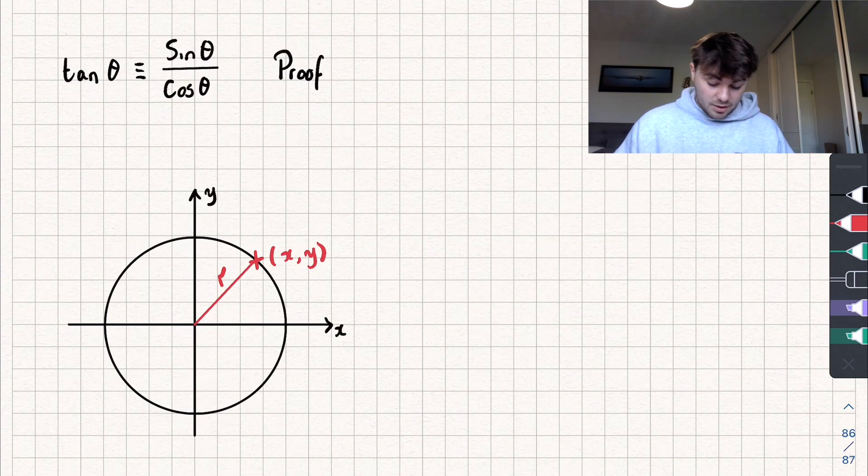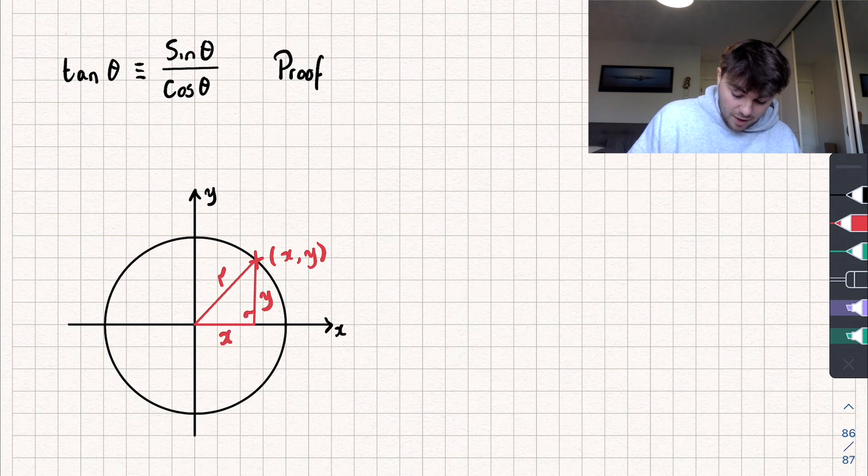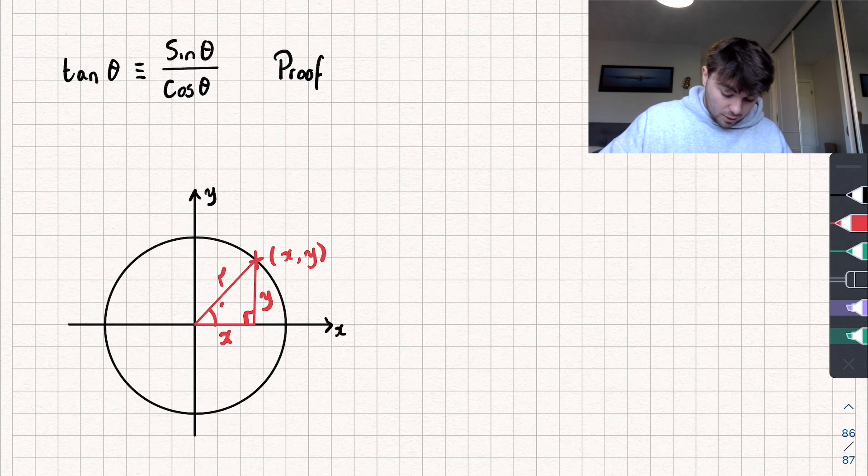And by doing this, if I was to draw a line going straight down from that point to the x-axis, that would have a length of y. And if I was to draw another line going along the x-axis like this, this would have a length of x. And you can see we've now constructed a right-angled triangle and I'm going to call this angle of our triangle theta degrees or radians, whatever you want to work in.